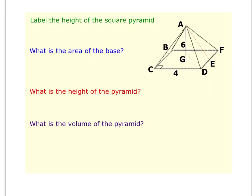So here we have a square pyramid. We're going to go through step-by-step and find the volume of this pyramid. Now, because they tell us it's a square pyramid, we know that all four sides of the base are congruent. So CD, DF, FB, and BC should all be equal to 4.